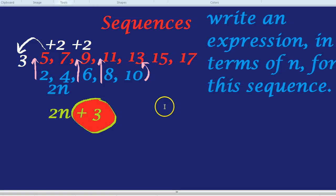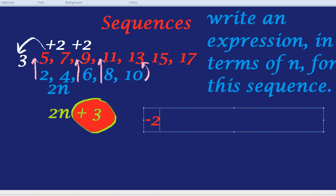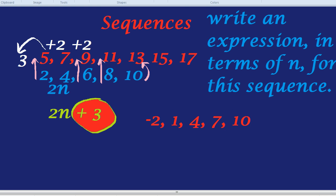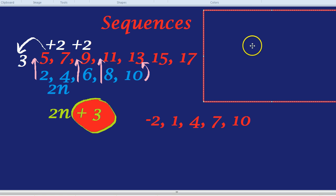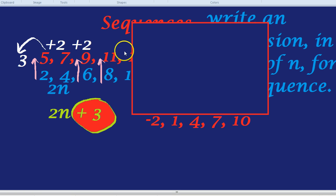Let's do a sequence such as minus 2, 1, 4, 7, and 10. Again, the question is to create an expression in terms of n for this sequence. The next term would be 13 and 16. But if we were asked for the 100th term or the 50th term or the 1,000th term, it would get very long writing that sequence out. So, that's why we look for expressions. What's this expression going up in? Remember, that's the first question we should ask.